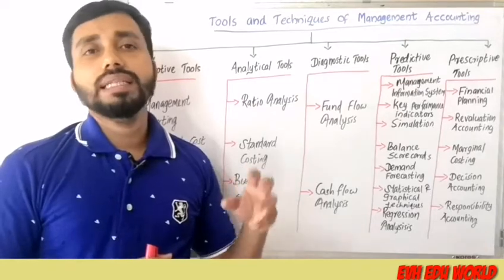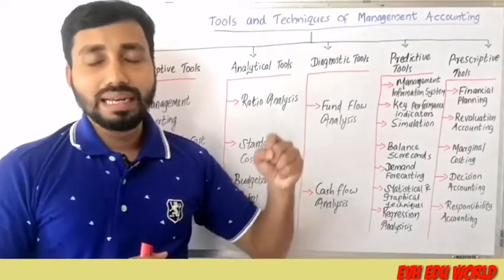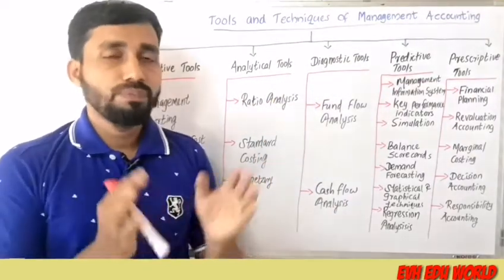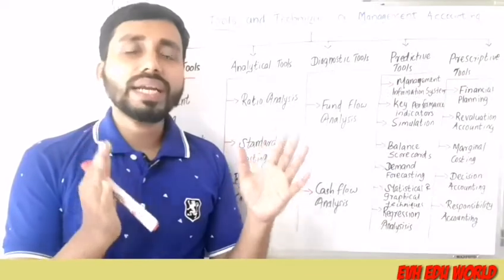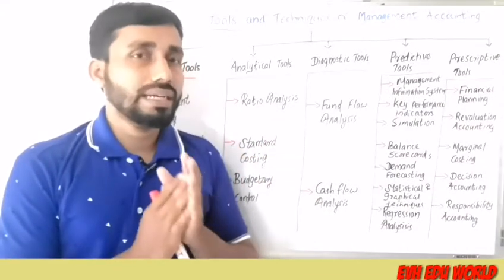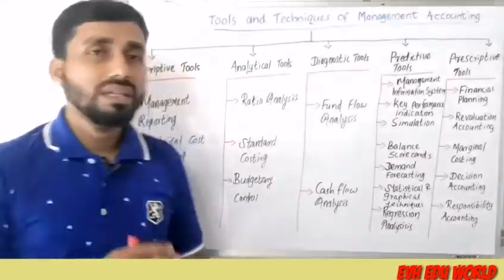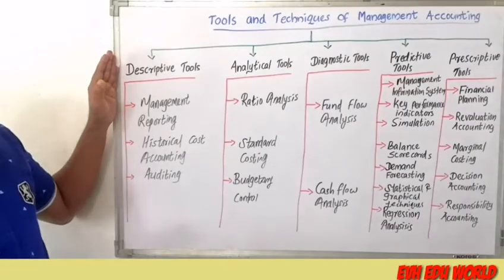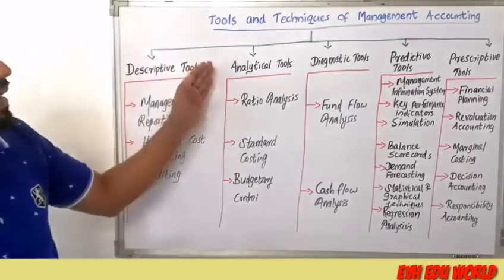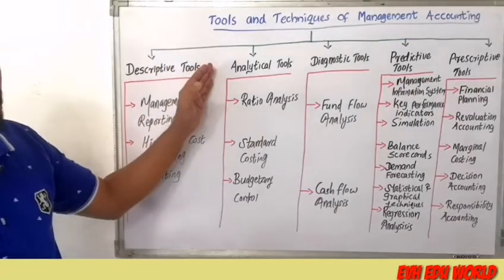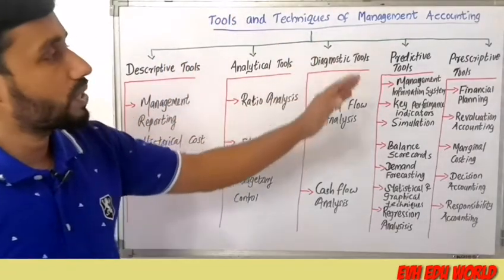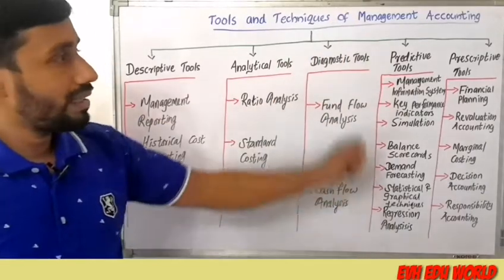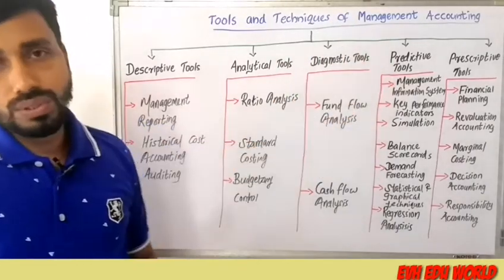The tools or techniques of management accounting generally include five categories: descriptive tools, analytical tools, diagnostic tools, predictive tools, and prescriptive tools.